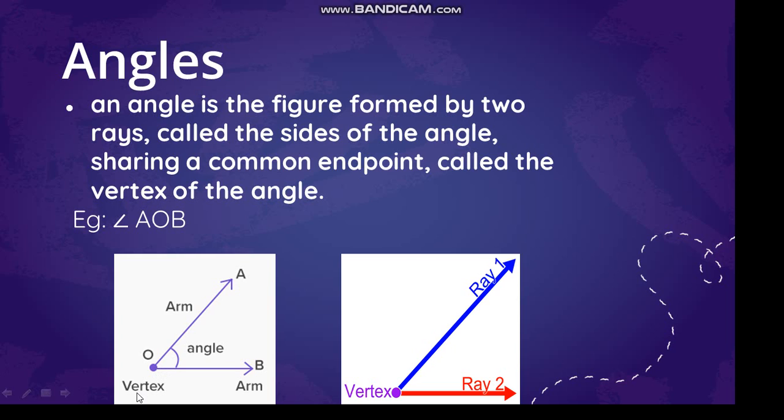So two rays join at an endpoint to form an angle. So you can form an angle using your hands, okay? Using your hands you can form an angle. Using your fingers you can show an angle. So these are the explanations given for an angle.